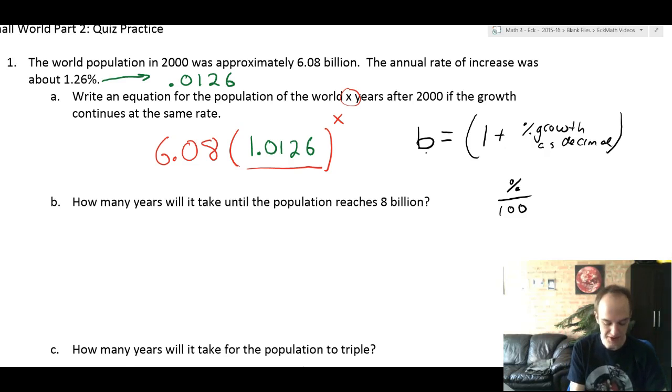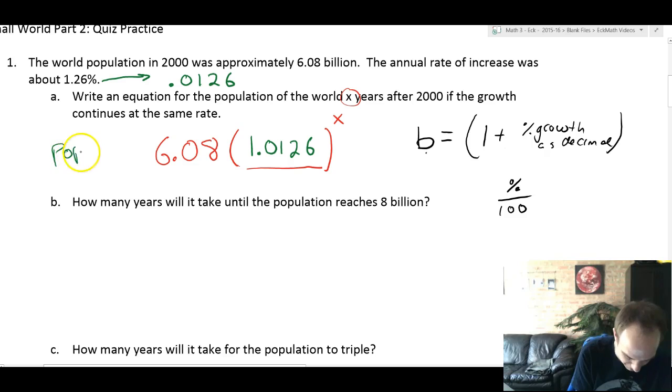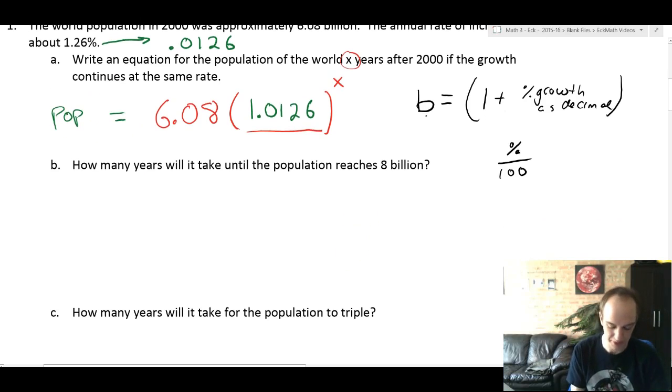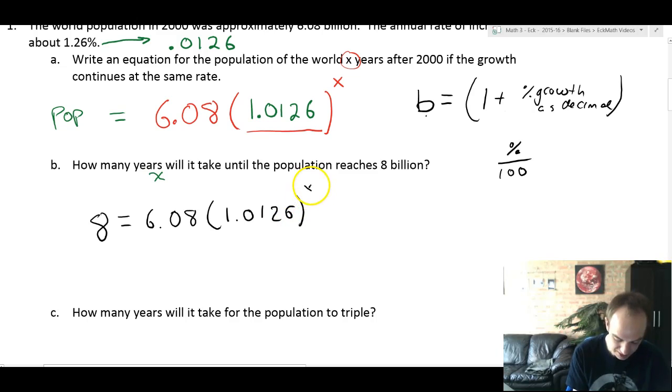Now based on our equation, population equals... How many years will it take until the population reaches 8 billion? So it says how many years, so we're trying to solve for x. We're gonna plug 8 billion into the population. So the setup is gonna look like this: 8 equals 6.08 times 1.0126 to the x.